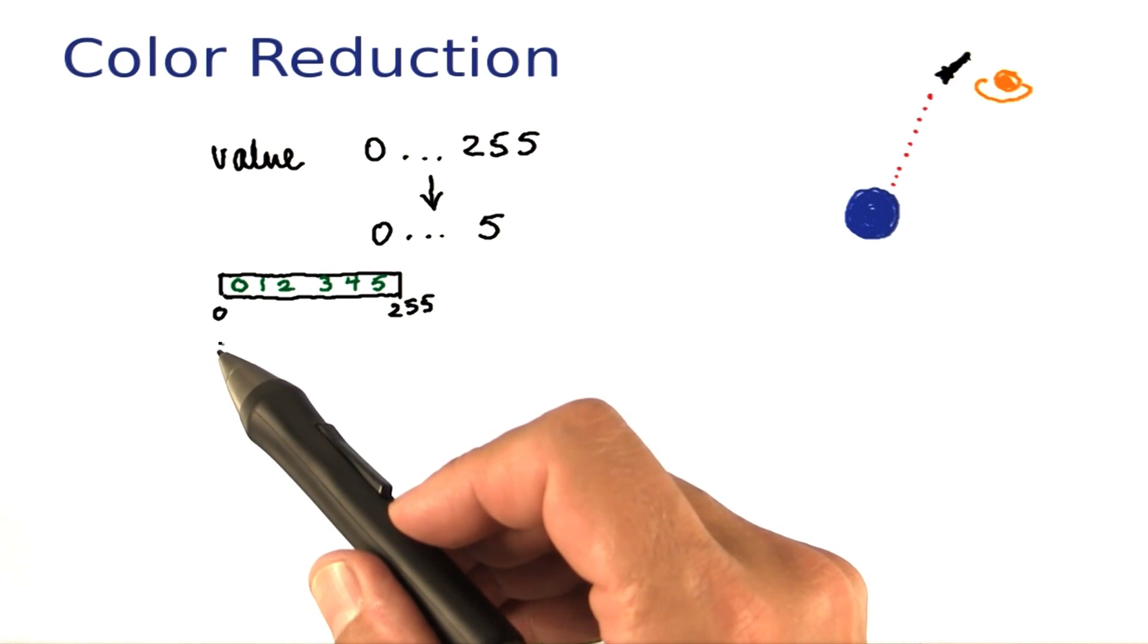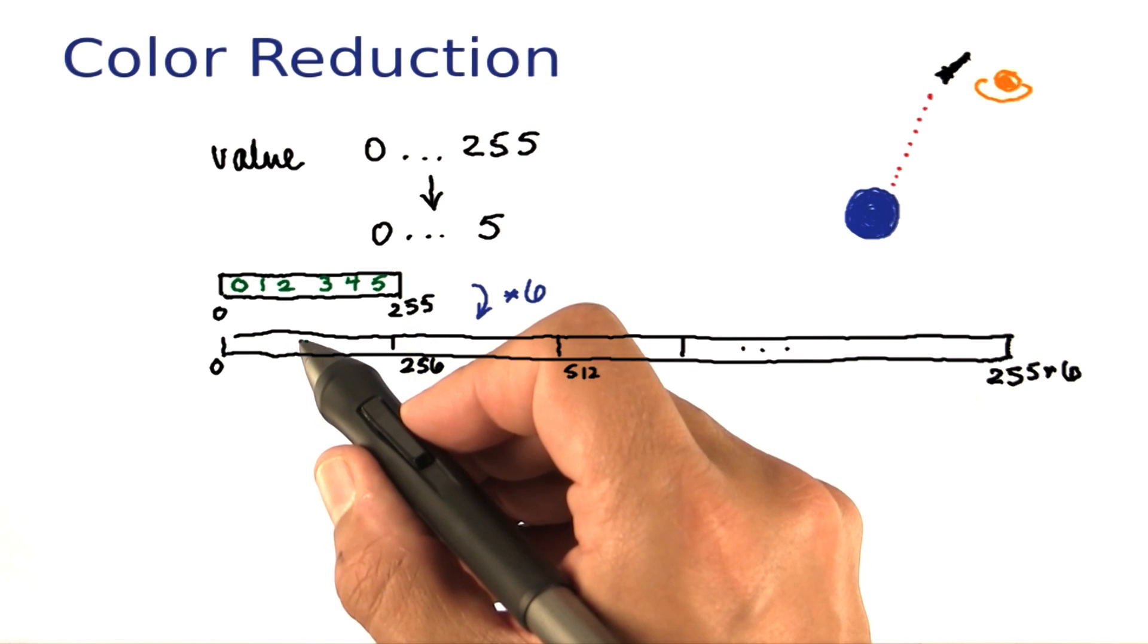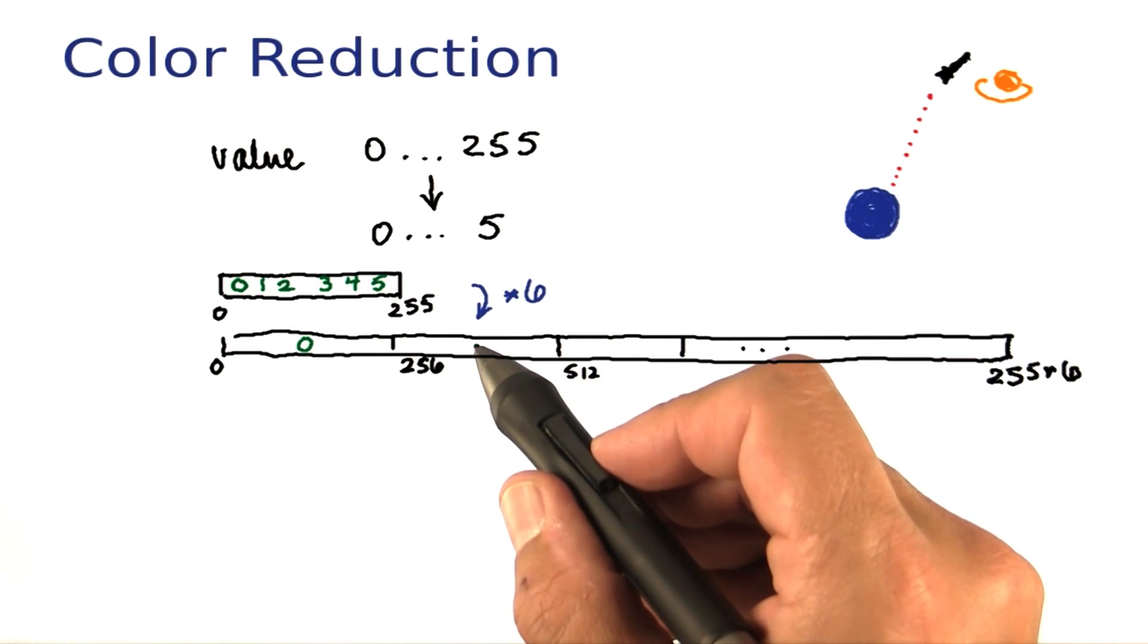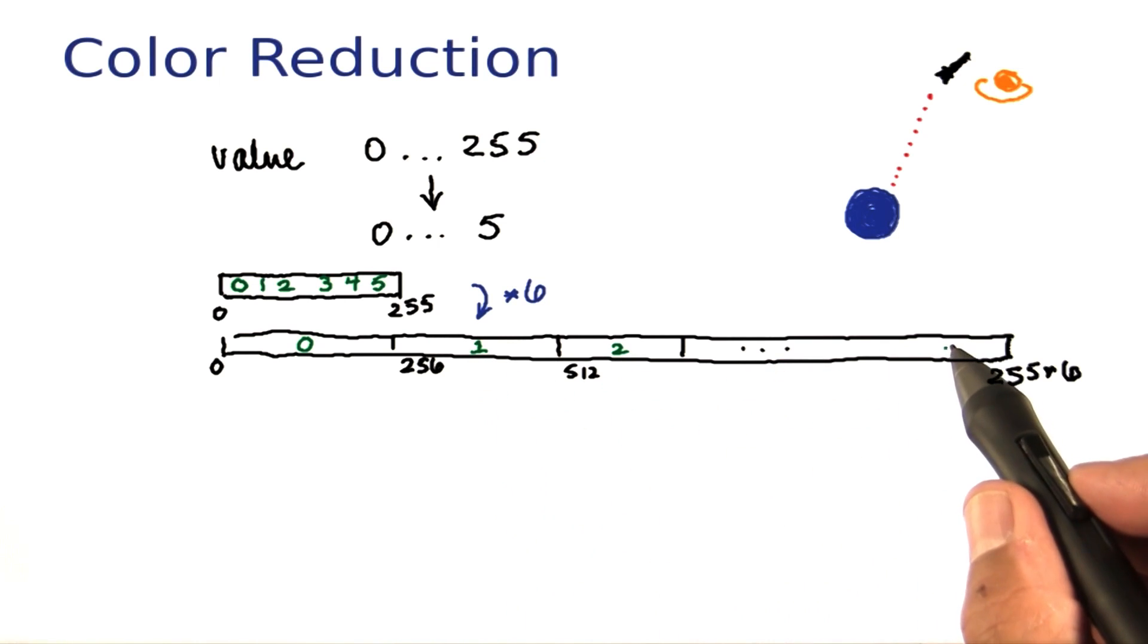Here's a way of doing that. First off, multiply by 6, and then divide by the length of this interval. That way, all the numbers in here will be 0, all the numbers in here will be 1, here there will be 2, and in the last region, there will be 5.